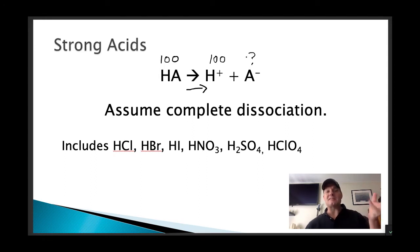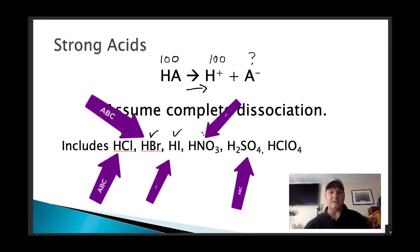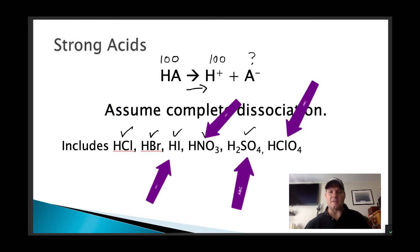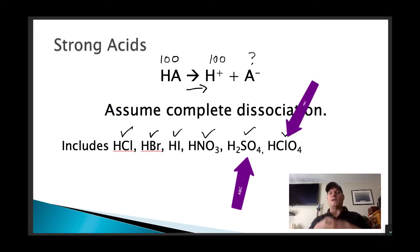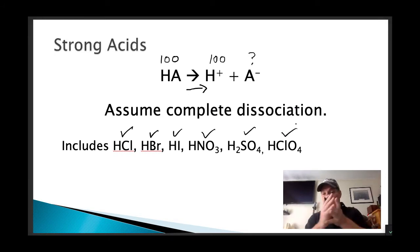Which acids are the strong acids? We have hydrochloric, hydrobromic, hydroiodic, nitric, sulfuric, and perchloric. These acids are all completely dissociated in solution. They're strong acids — completely dissociated.